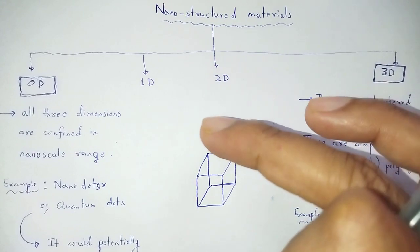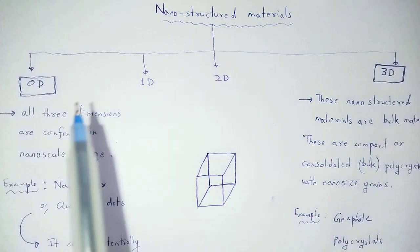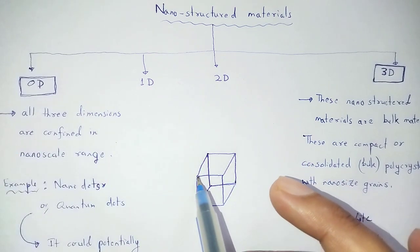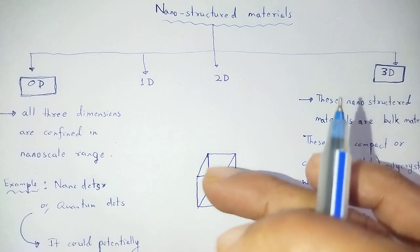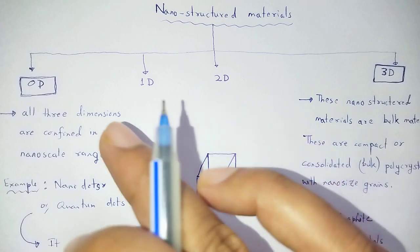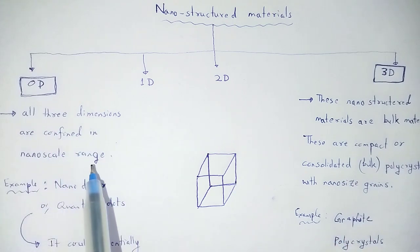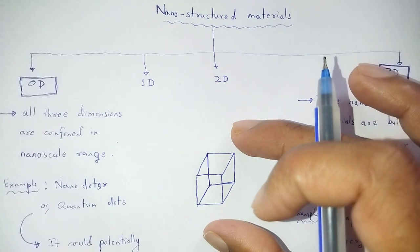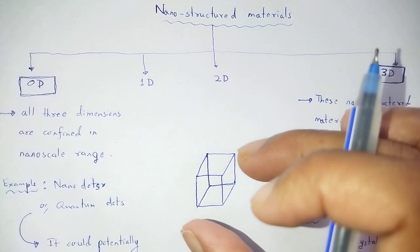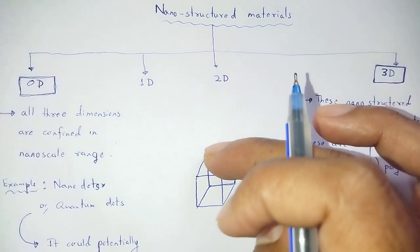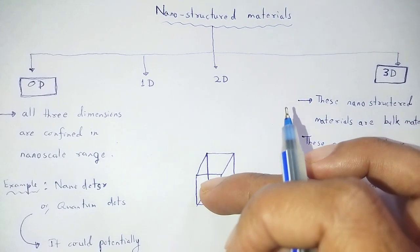When a bulk material is reduced to the nanoscale range and all three dimensions are confined within a nanoscale range, it is called a zero-dimensional nanomaterial. That means the length, breadth, and height are all less than the nanoscale range — each dimension is confined to the nanoscale.